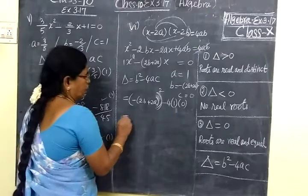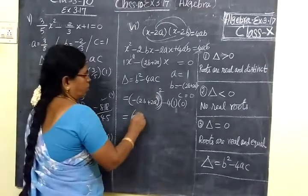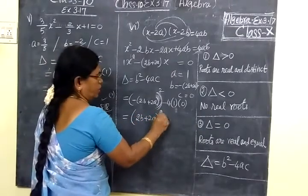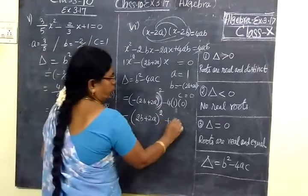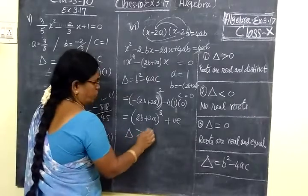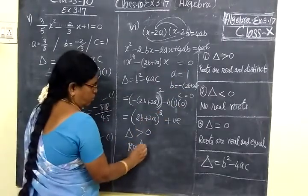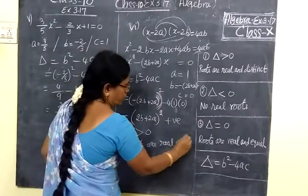So (-2b+2a)² is positive, since a square is always positive. So delta is greater than 0. When delta > 0, we write: roots are real and distinct. Distinct means unequal.